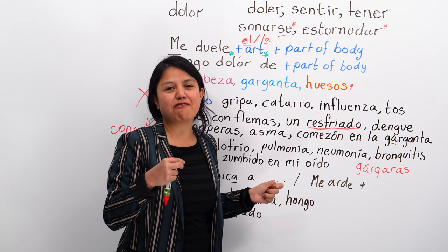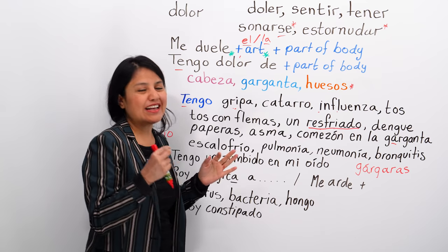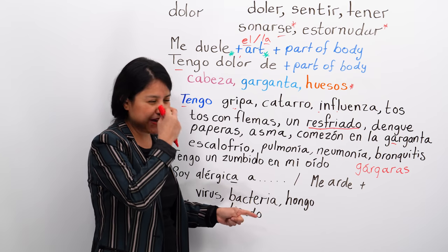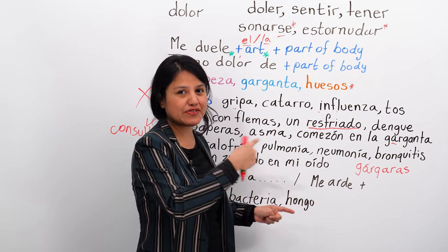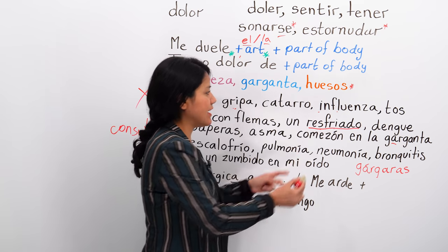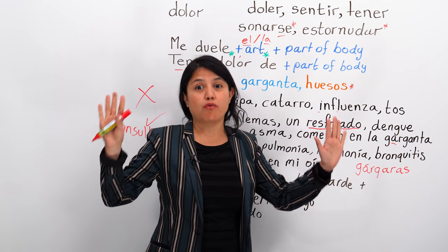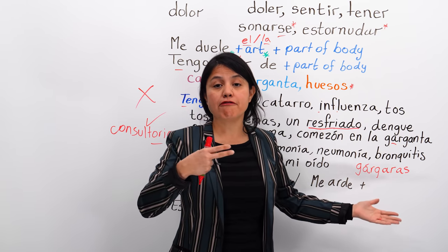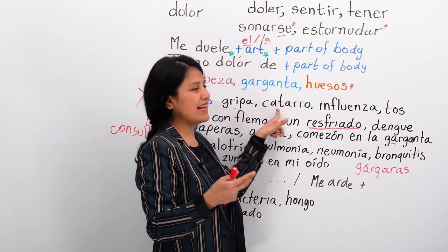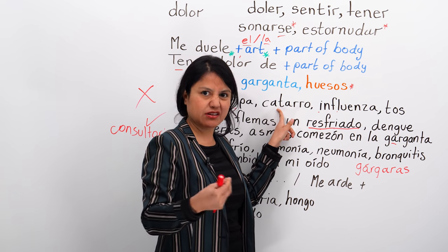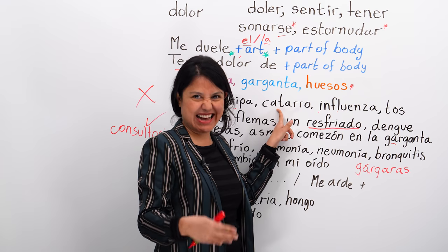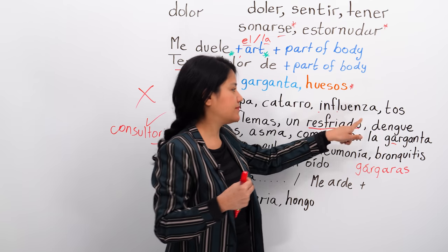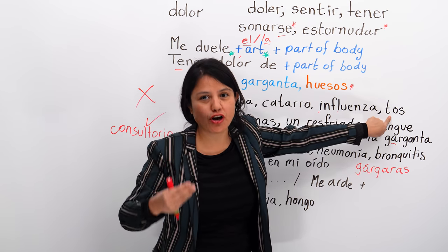Constipado in Spanish means your nose is really blocked — it's a false friend, not the English meaning. Tengo catarro, tengo influenza, tengo tos — cough. So: gripa = cold; catarro = nastier cold; influenza = flu; tos = cough. Tengo tos.